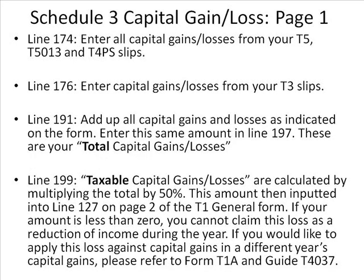Line 174: enter all capital gains or losses from your T5, T5013, and T4PS slips. Line 176: enter capital gains or losses from your T3 slips. Line 191: add up all capital gains and losses as indicated on the form and enter the same amount into line 197. Line 199: taxable capital gains or losses are calculated by multiplying the total by 50%. This amount is then inputted into line 127 on page 2 of the T1 General Form. If your amount is less than zero, you cannot claim a loss as a reduction of income during the year. To apply this loss against capital gains in a different year, please refer to form T1A and guide T4037.